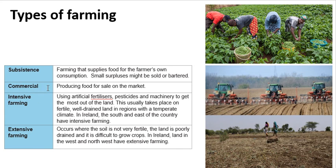Commercial farming is basically producing food for sale on the markets. A commercial farm is very often owned by a big company. For example, McDonald's might have a commercial farm where cattle are raised purely to produce beef for their burgers. Another example is Nescafé, who might have a coffee farm where all the coffee beans go into making Nescafé coffee.